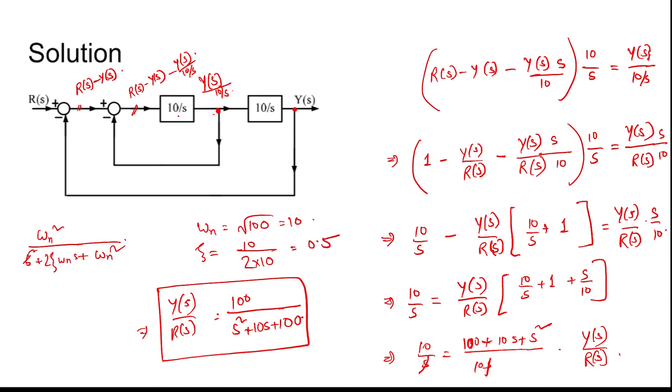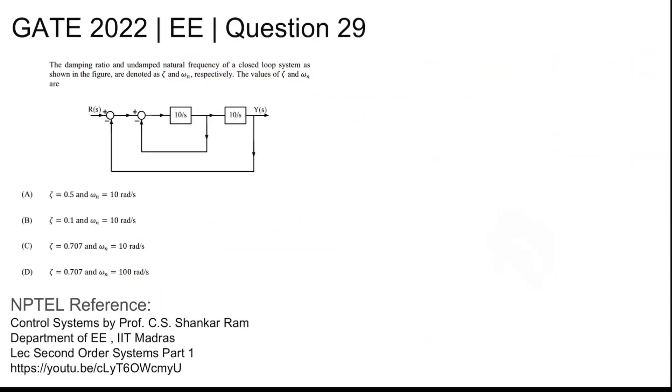So zeta is 0.5 and omega n is 10. Option A is the correct option. Thank you.